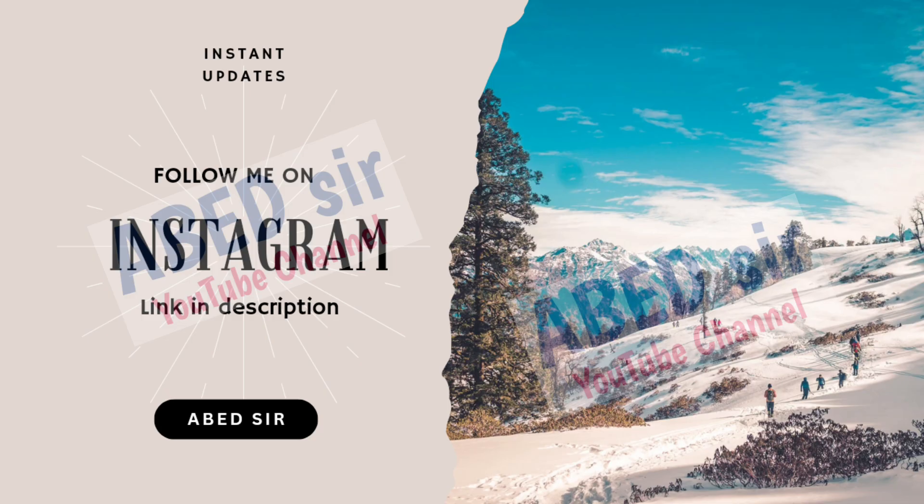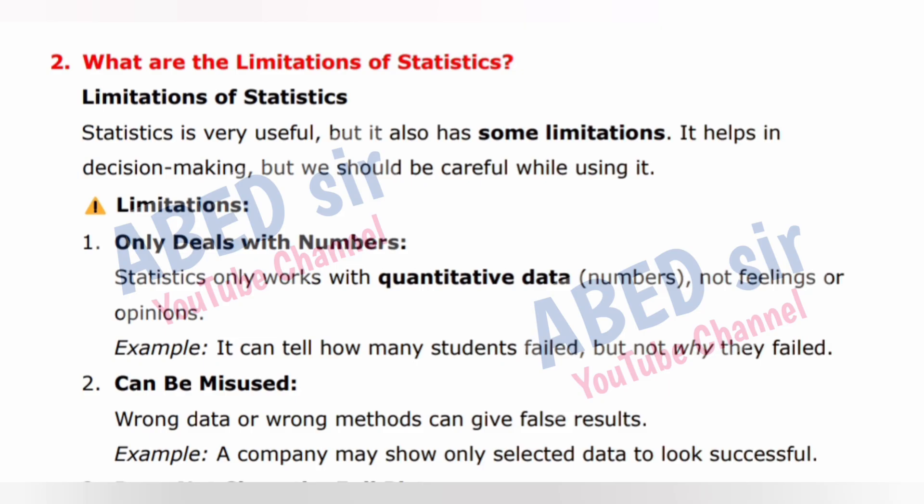Next important short question: What are the limitations of statistics? Statistics is very useful, but it also has some limitations. It helps in decision making, but we should be careful while using it. Limitation 1: Only deals with numbers. Statistics only works with quantitative data — numbers — not feelings or opinions.